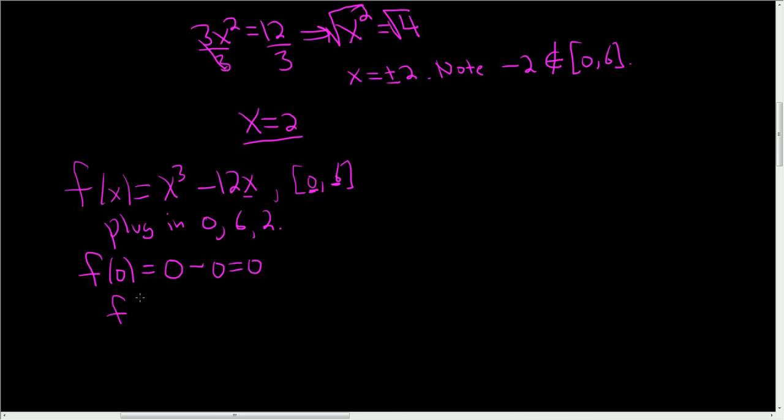f of 6. That'll be 6 cubed. What is 6 cubed? 6 cubed is 36 times 6, so that's 216.